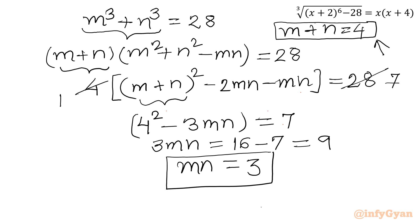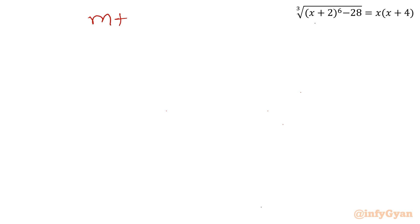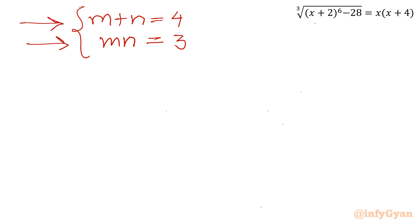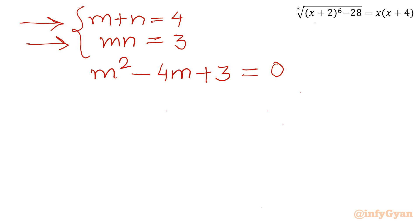Now our equations are m plus n equal to 4 and mn equal to 3. Let us frame a quadratic equation whose roots are m and n, with sum of roots 4 and product of roots 3. So we write m squared minus 4m plus 3 equal to 0. I will use the quadratic formula.